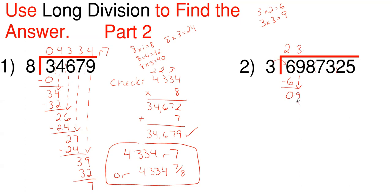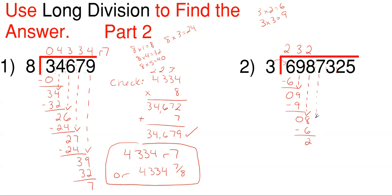3 times 3 gives me 9 — so 9 minus 9 is 0. And then you just drop your next number of 8. How many times does 3 go into 8 without going over? Well, 3 times 3 is 9, which is over, so we go to 3 times 2, which is 6. It goes into 8 two times without going over. 3 times 2 gives me 6, so 8 minus 6 gives me 2. And then I'm going to drop my next number, and this now becomes 27.